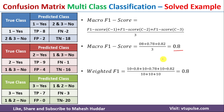The weighted F1 score equals the number of class 1 examples × F1 score of class 1, plus the number of class 2 examples × F1 score of class 2, plus the number of class 3 examples × F1 score of class 3, all divided by the total number of examples (class 1 + class 2 + class 3). This gives a weighted F1 score of 0.8.